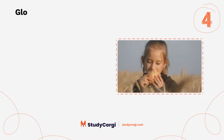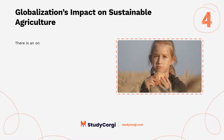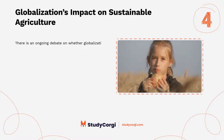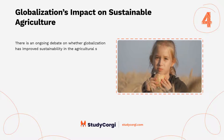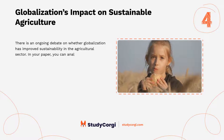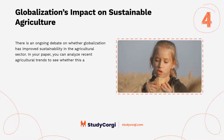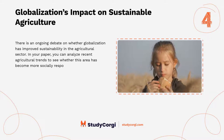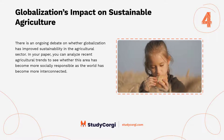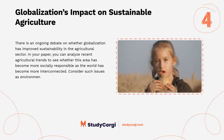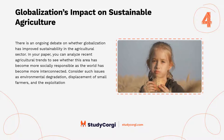Globalization's impact on sustainable agriculture. There is an ongoing debate on whether globalization has improved sustainability in the agricultural sector. In your paper, you can analyze recent agricultural trends to see whether this area has become more socially responsible as the world has become more interconnected. Consider such issues as environmental degradation, displacement of small farmers, and the exploitation of workers.